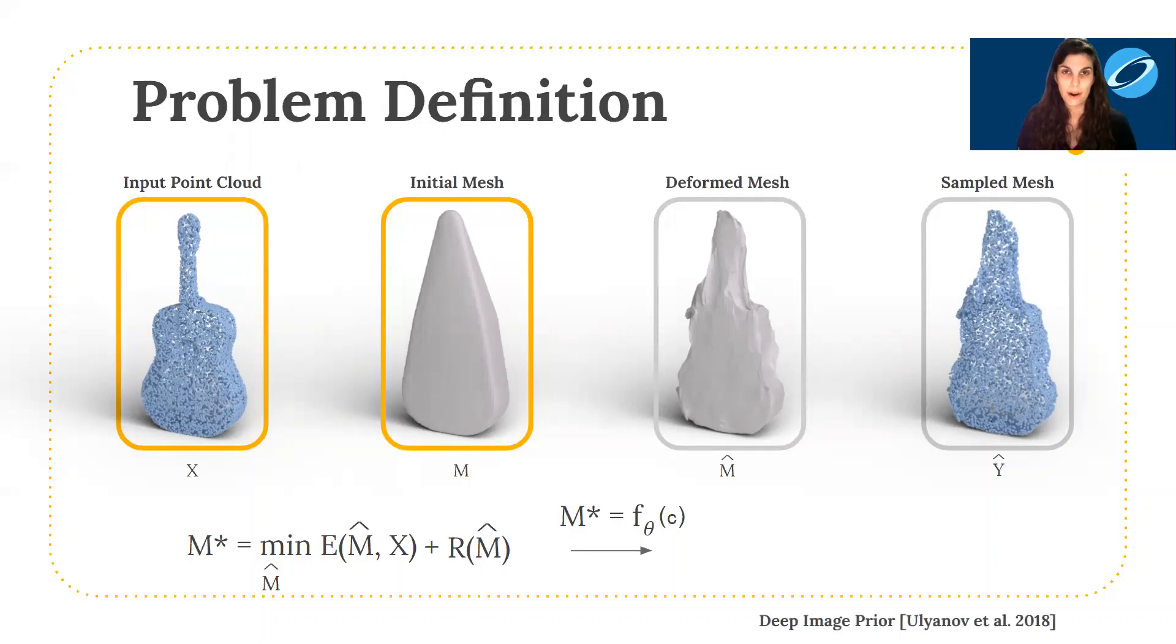In this work, we want the network to automatically define the prior for us. This idea was first presented for images in the deep image prior. Here we say that the optimal reconstructed mesh M* is some parameterization of a neural network F with weights θ using a fixed random tensor C as input. So instead of optimizing for the best reconstructed mesh, we optimize for the best network weights θ*, such that our energy term is minimized. Note that the network has a limited capacity, so it cannot reconstruct every possible mesh.